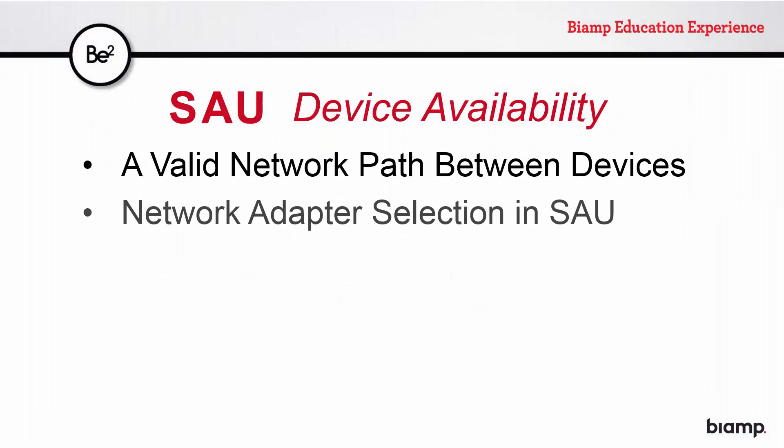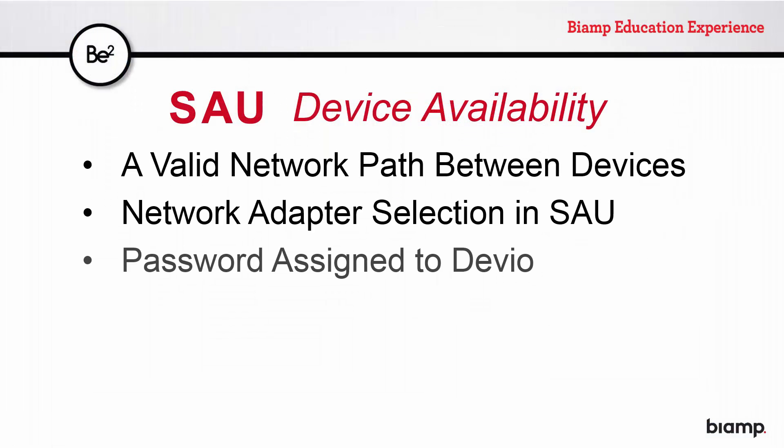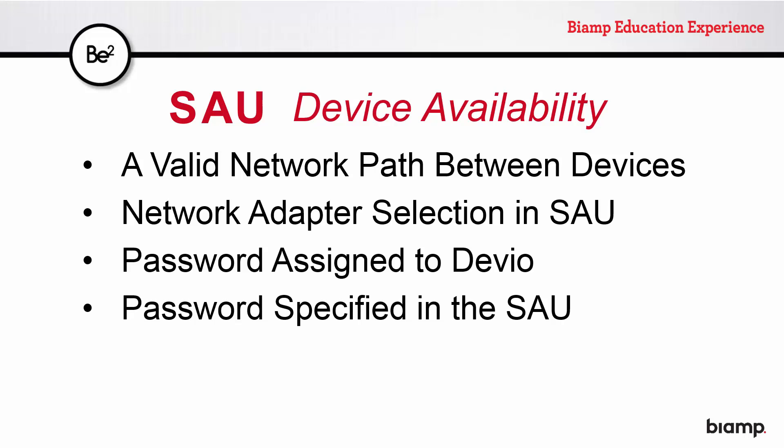So, device availability in the SAU relies on the existence of a valid network path between your computer and the device, selecting the correct network adapter on your computer for the SAU to communicate through, the password assigned to the individual Devio device, and the password specified in the SAU's password field.